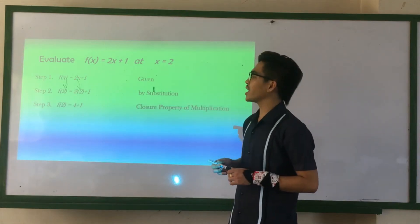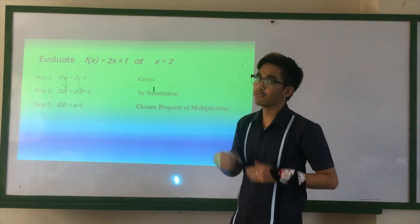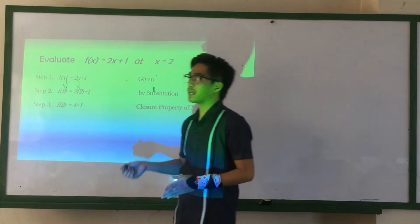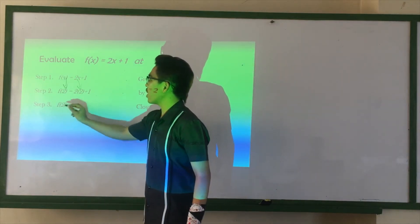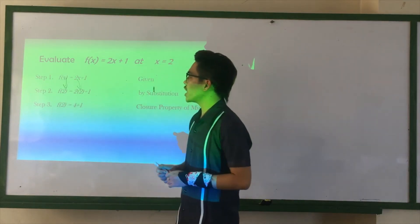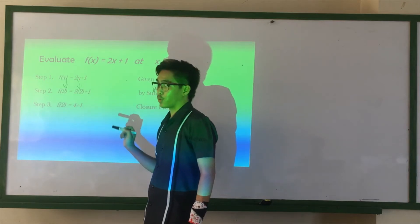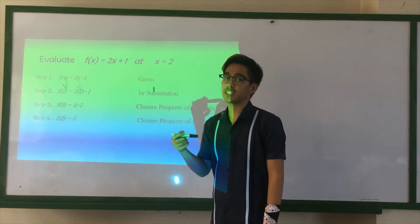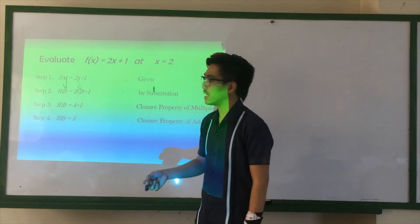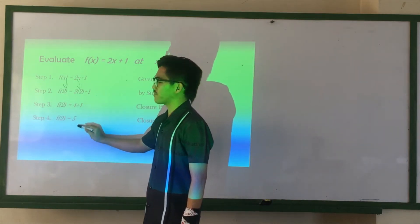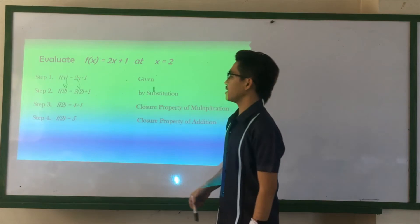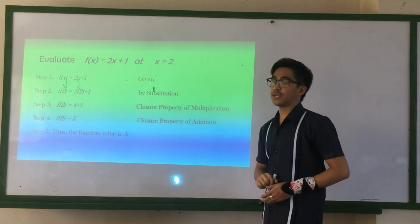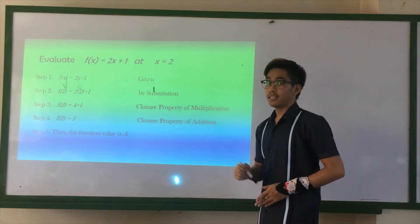Next step, we use the closure property of multiplication. We simply multiply. So, F of 2 equals 4, 2 times 2, that is 4 plus 1. The next step, we use the closure property of addition. We simply add 4 plus 1 is 5. Thus, the function value is 5. Just simple.